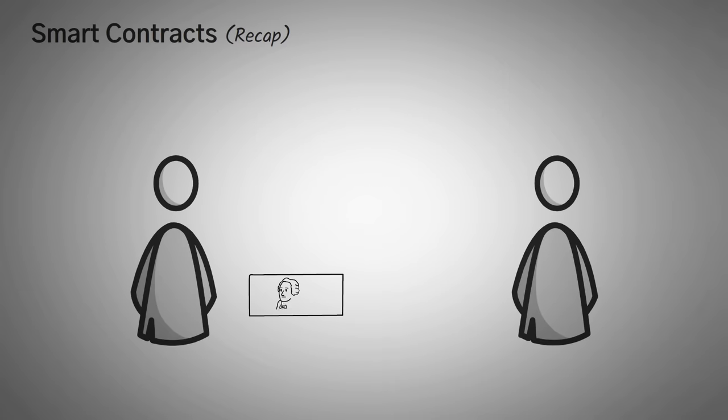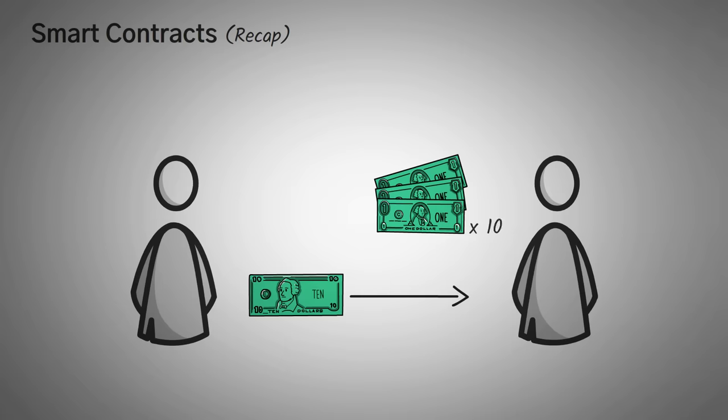Moving on, smart contracts can be as simple as if I pay you $10 today, you'll pay me back $1 every day for the next 10 days.